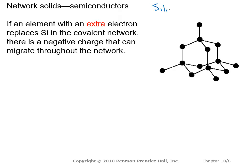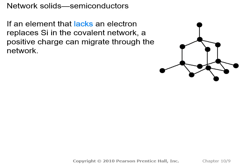Silicon is used as a semiconductor. If you have an element with an extra electron, it replaces one of the Si atoms in the covalent network, and that negative charge can then migrate throughout the entire network. If an element is put in that lacks an electron, then we've got a positive charge that can migrate throughout the entire network.